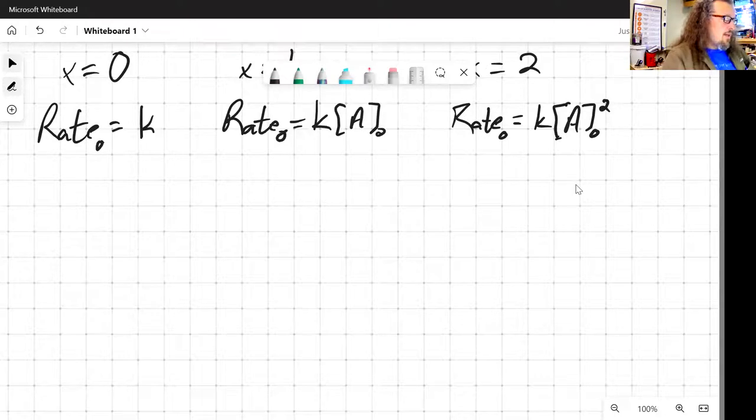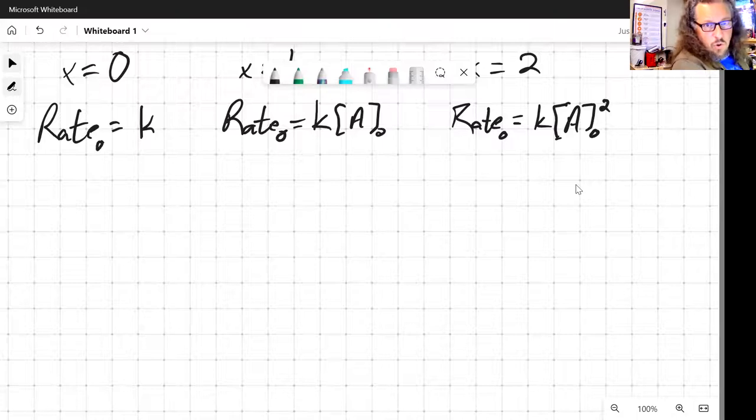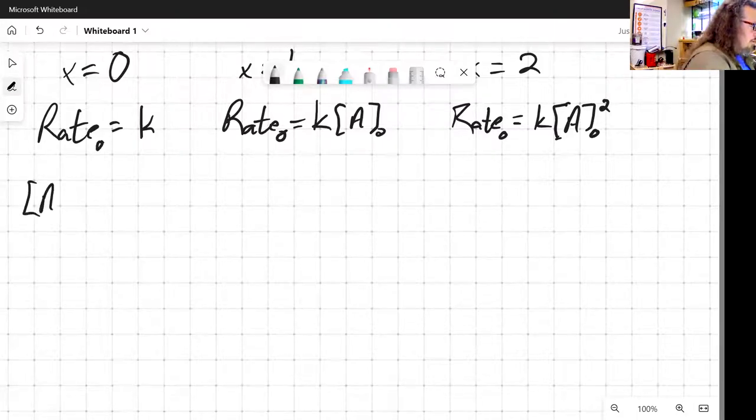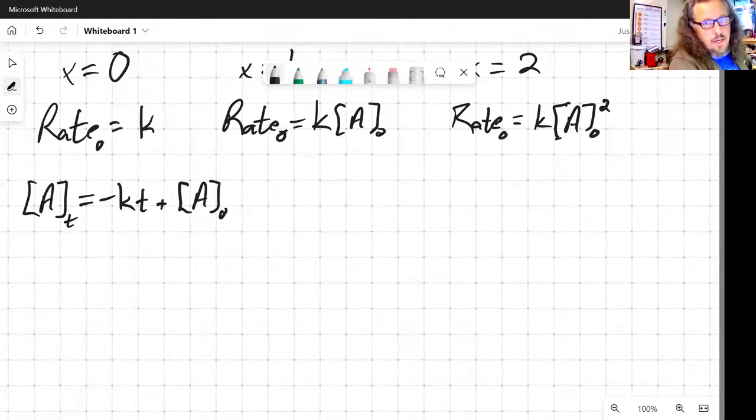And now if we look at integrated forms of those rate law expressions, for x equals 0, for a zeroth order process, what we end up finding is that the concentration of A at time t is equal to -kt plus concentration at time zero.